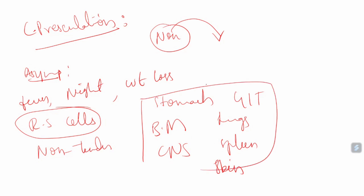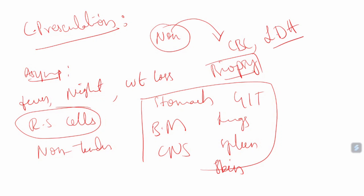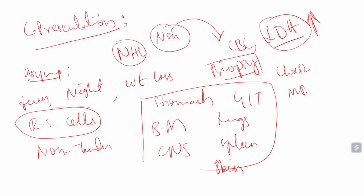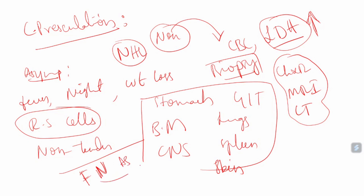To identify non-Hodgkin's lymphoma, biopsy is done and cancerous lymphocytes are examined under the microscope. Complete blood count shows decreased other cells. Lactic dehydrogenase (LDH) levels are highly elevated — this is the main hallmark. Chest X-ray, MRI, and CT scans are used to see involvement across different tissues. Fine needle aspiration is not done, same as with Hodgkin's lymphoma.